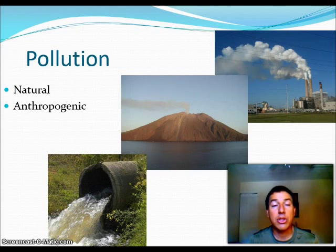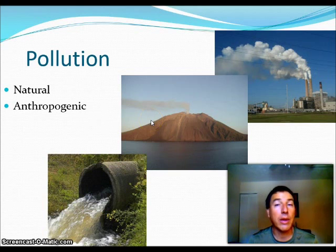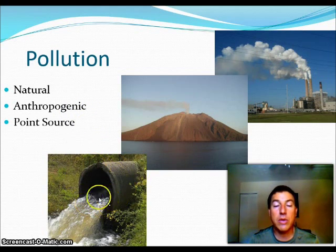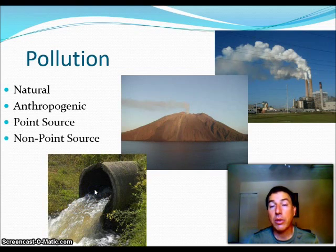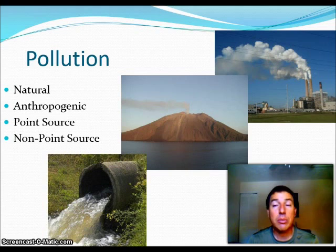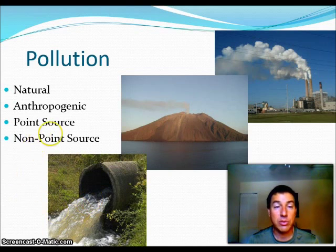Anthropogenic just means human-caused pollution — any time you hear the word anthropogenic, think human-caused situations. There are also different categories of pollution. Point source pollution comes from a specific identifiable source, like pollution coming out of a single pipe. Non-point source pollution is when, for example, you have a huge agricultural field and the nitrogen fertilizer the farmer applied is running off into the nearest water body — you can't point to a single pipe or smokestack. That is called non-point source pollution.